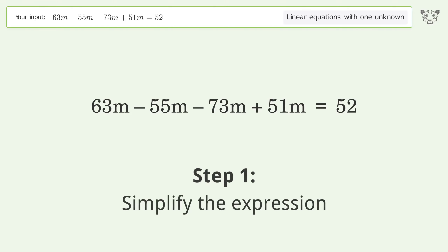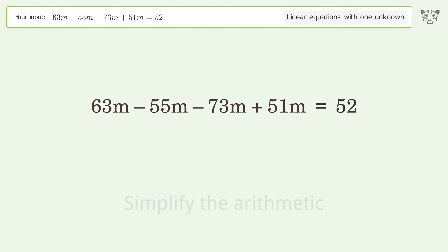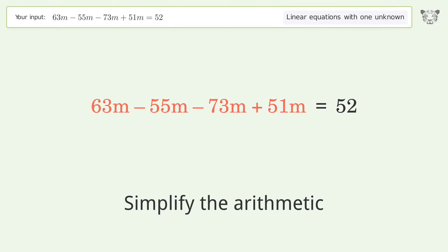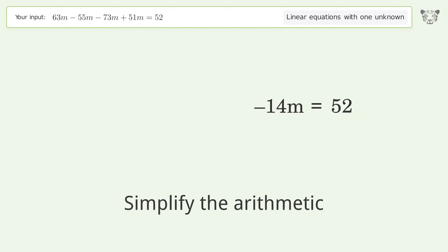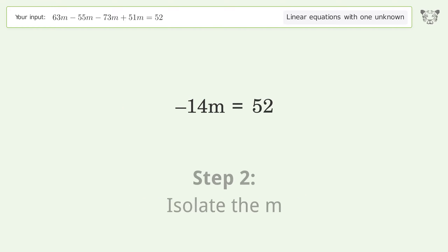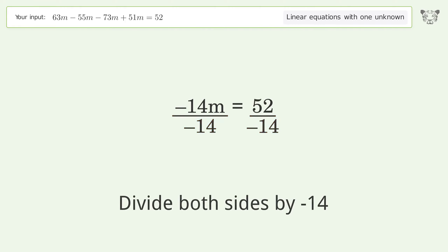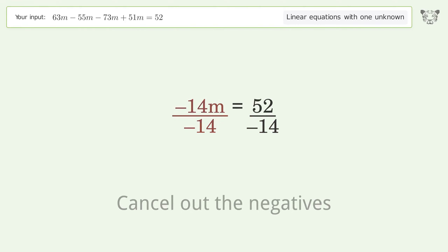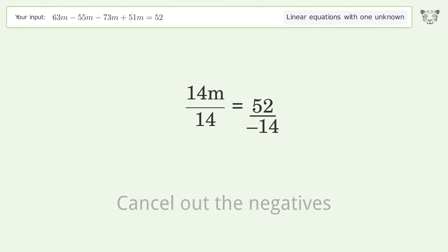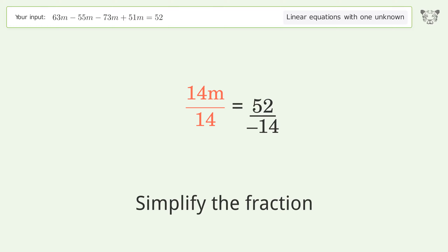Simplify the expression and simplify the arithmetic. Then isolate m by dividing both sides by negative 14. Cancel out the negatives, then simplify the fraction.